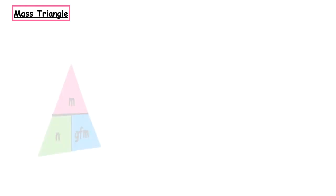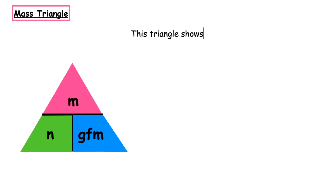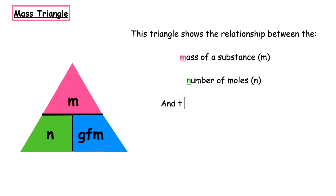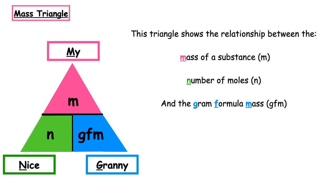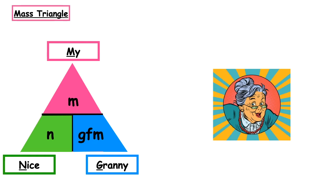In today's lesson we are going to be using the mass triangle. This triangle shows the relationship between the mass of a substance — represented by m, always measured in grams — n, which represents the number of moles, always measured in moles, and the gram formula mass, known as the GFM, also measured in grams. A way to remember this is using the story 'My Nice Granny': m for My, n for Nice, and g for Granny.